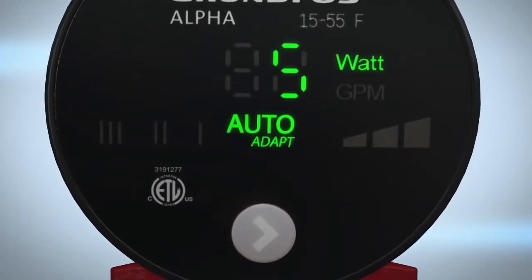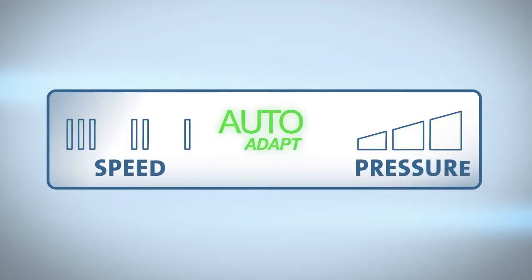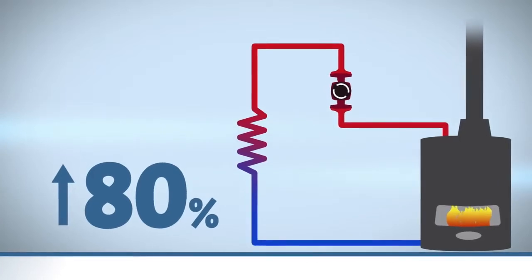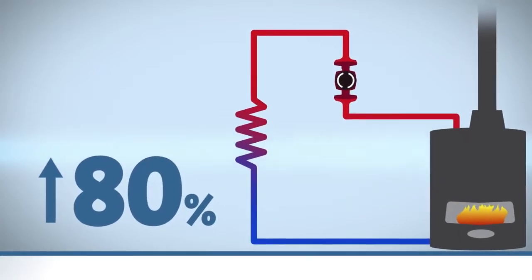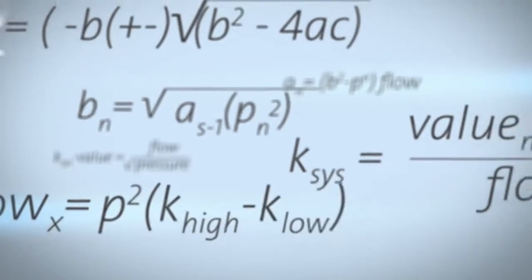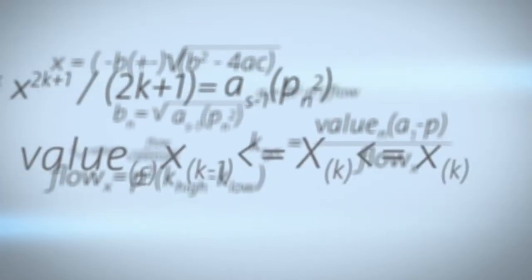While the Alpha provides seven operating modes, AutoAdapt is the preferred choice in more than 80% of today's residential hydronic applications. Here's why: AutoAdapt software uses advanced math and algorithms to adjust the motor speed and flow needed to meet the system's demand.